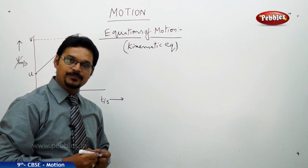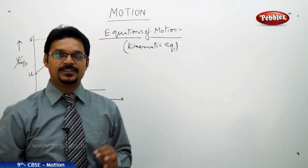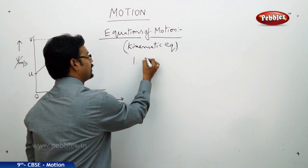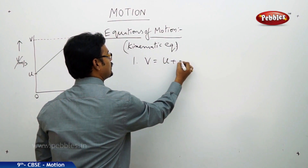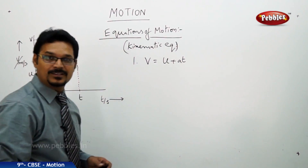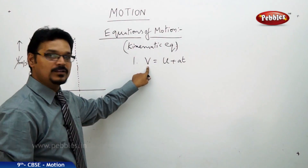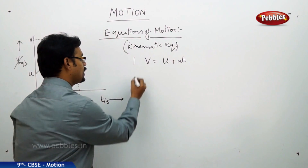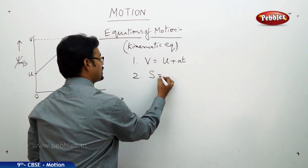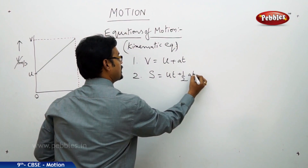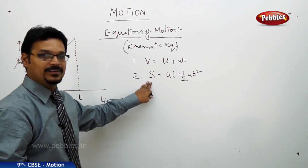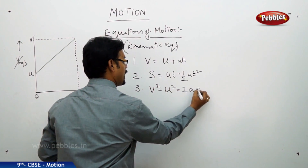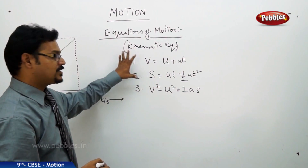We have three important equations you need to remember. Number one: v = u + at, where v is final velocity, u is initial velocity, a is acceleration, and t is time taken. Number two: s = ut + ½at², where s is the distance traveled. Number three: v² - u² = 2as.